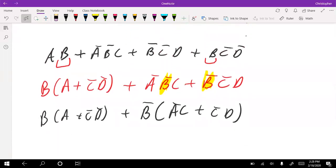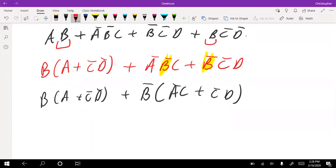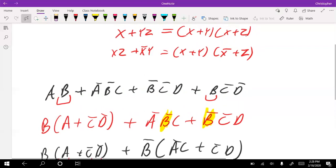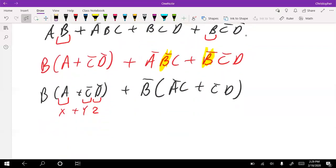Now I want to work on the items in parentheses and try to expand those into a product of some term. Let's have A be x plus C bar be y and D bar be z. So I have an x plus yz. Using our theorem, we see that x plus yz can be expanded out into a product of terms. That gets expanded to x plus y times x plus z.